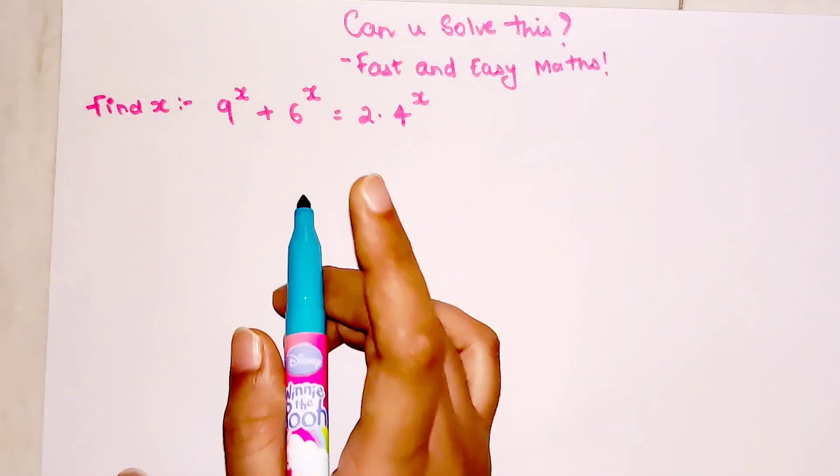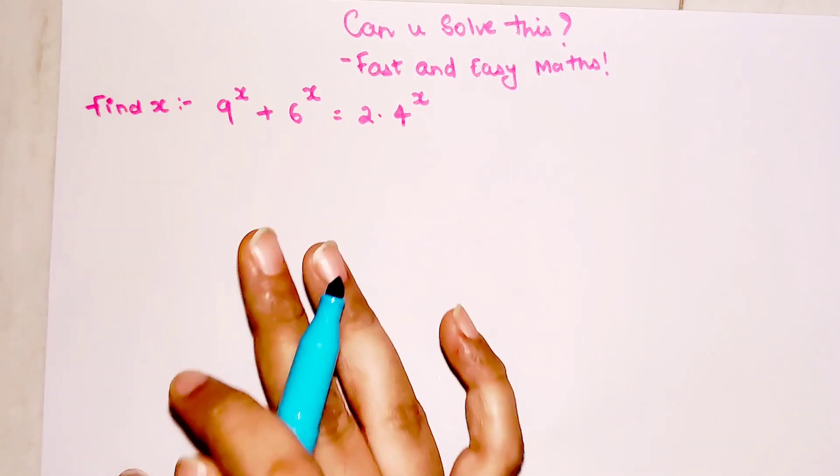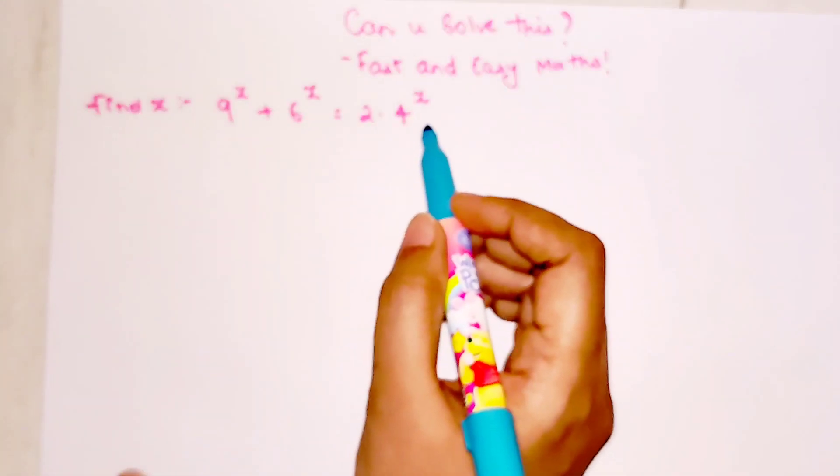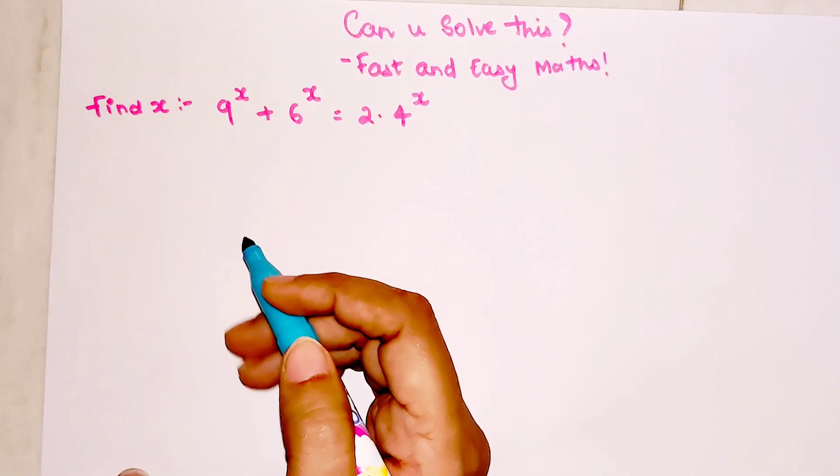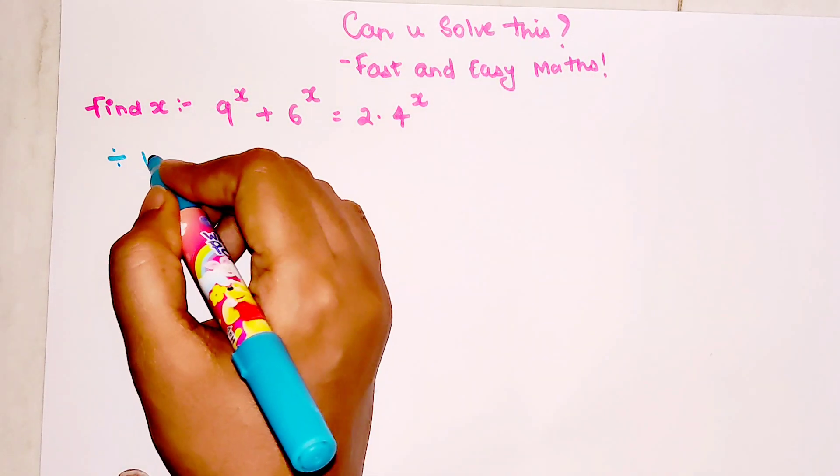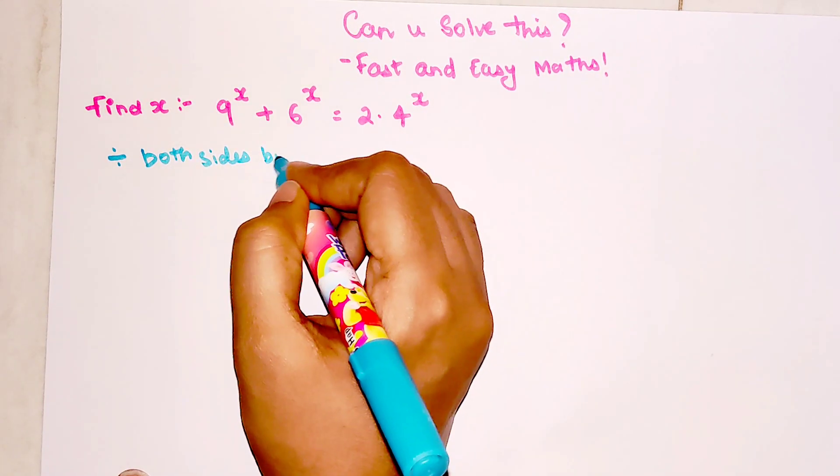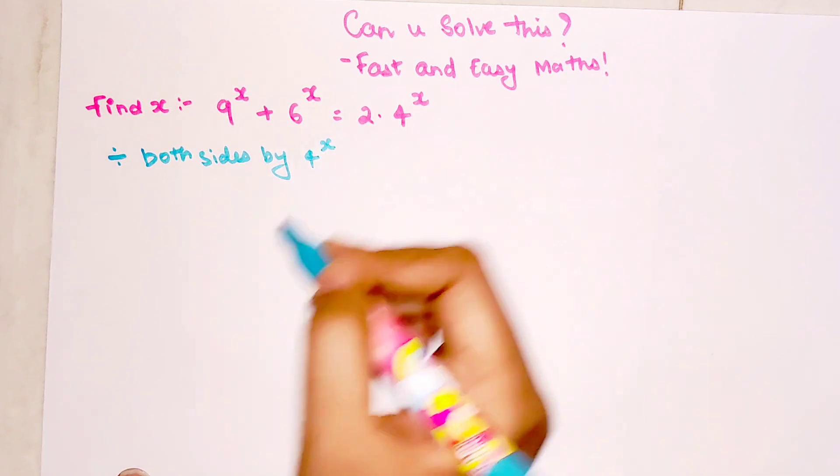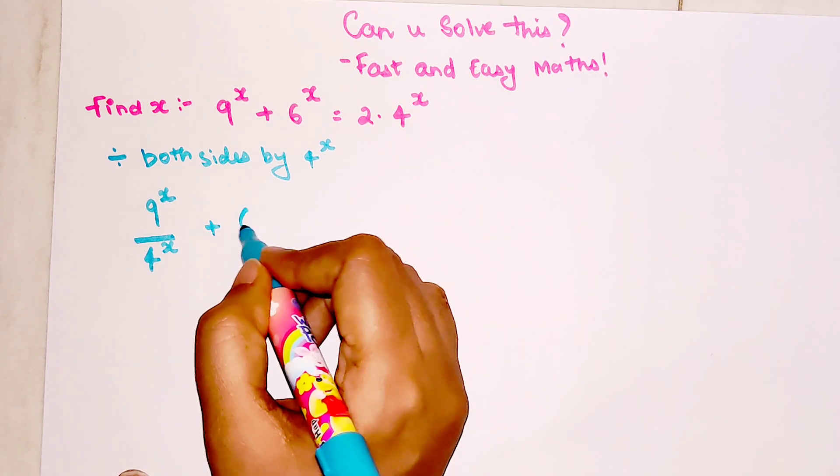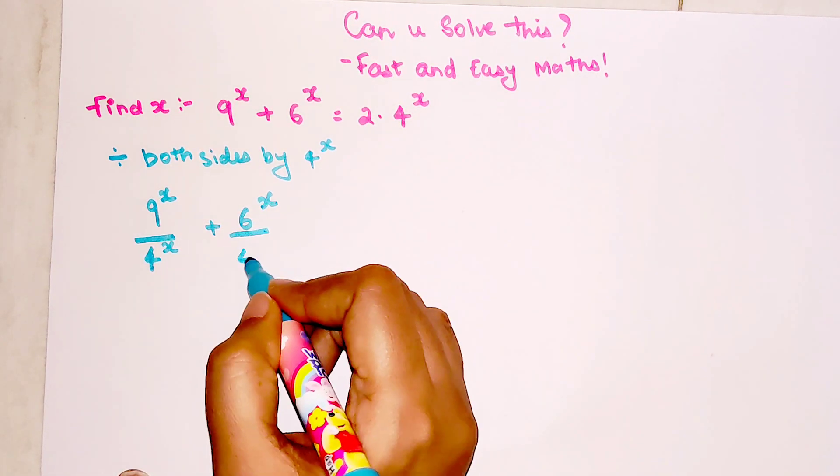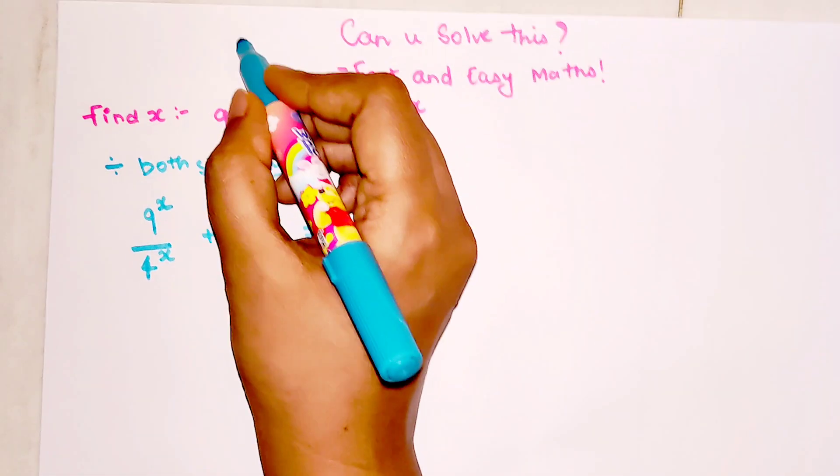The first step, if you can find it rightly, then the entire sum becomes very easy. First thing you should do is all the powers of x have to be shifted on this side of the equal to. For that, we will divide both sides by 4^x. So here we get 9^x/4^x + 6^x/4^x = 2.